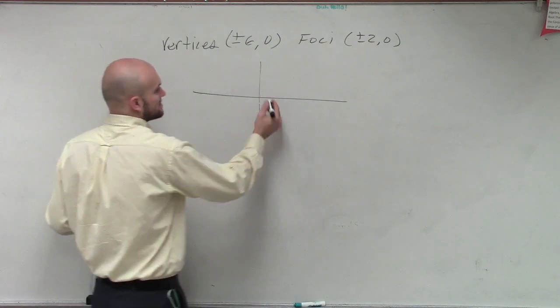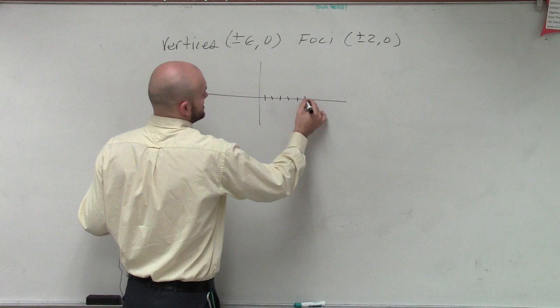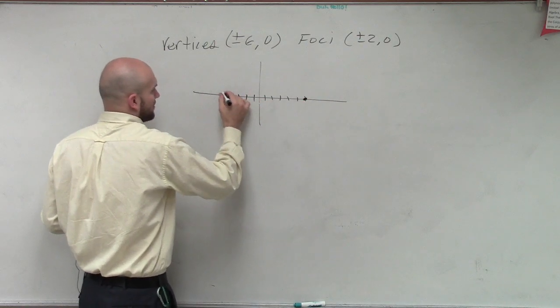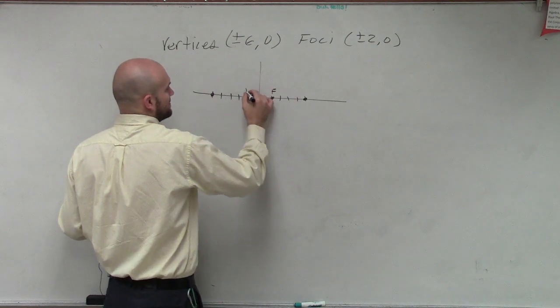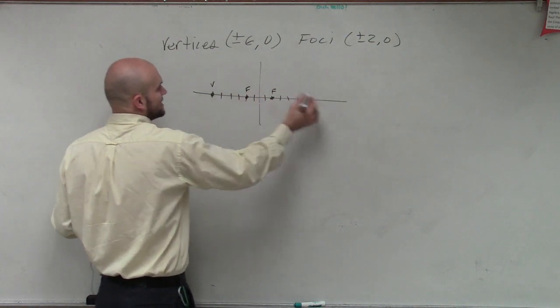So, let's just plot the information and see what makes sense. So, our vertices are plus or minus 6. So, 1, 2, 3, 4, 5, 6. 1, 2, 3, 4, 5, 6. Foci plus 2. Negative 2. So, we have foci, foci, vertice, vertice.